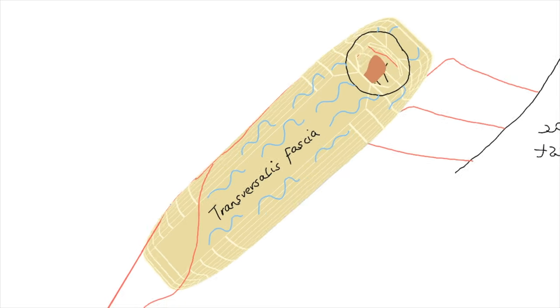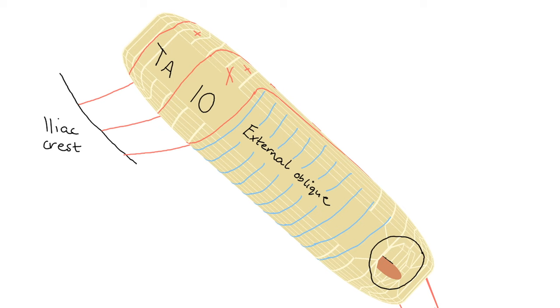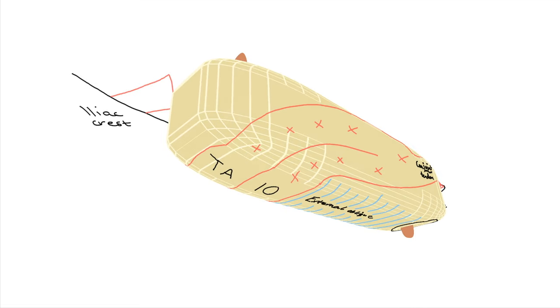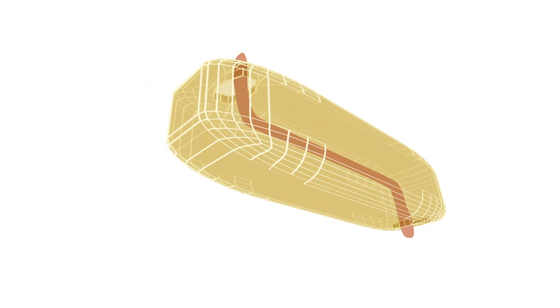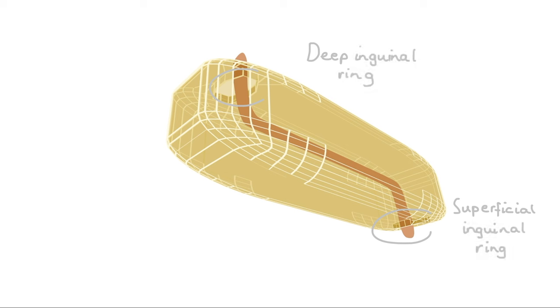The two places they can occur correlate with the canal's two areas of weakness. If we look at the canal here, it's pretty clear where the areas of weakness are. It's the two holes, the deep and the superficial inguinal rings.